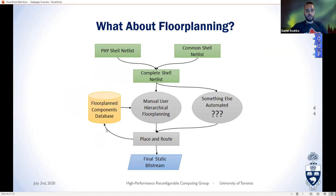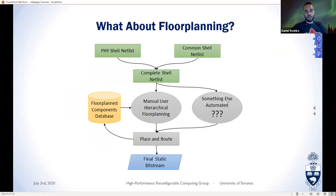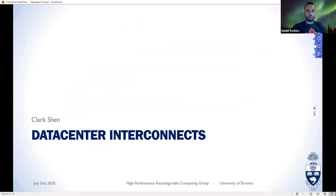Once you have the shell, we do manual hierarchical floor planning. We also maintain a database storing place-and-route results for different hierarchies, so if you change something at a higher abstraction level you don't have to re-place-and-route the lower levels. Whether we can automate this further is something we're currently thinking about. I'll now pass it over to Clark to cover the interconnects.